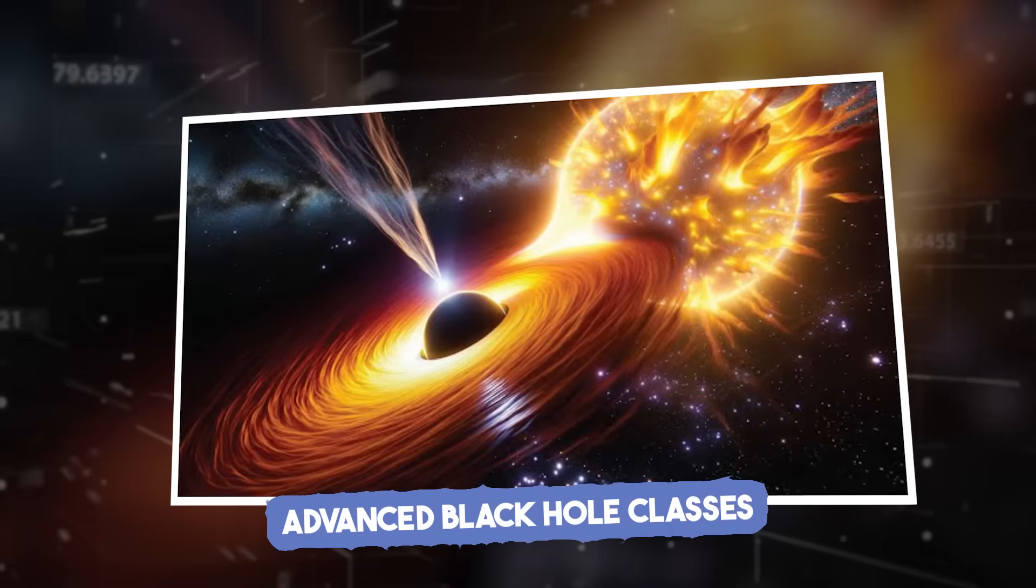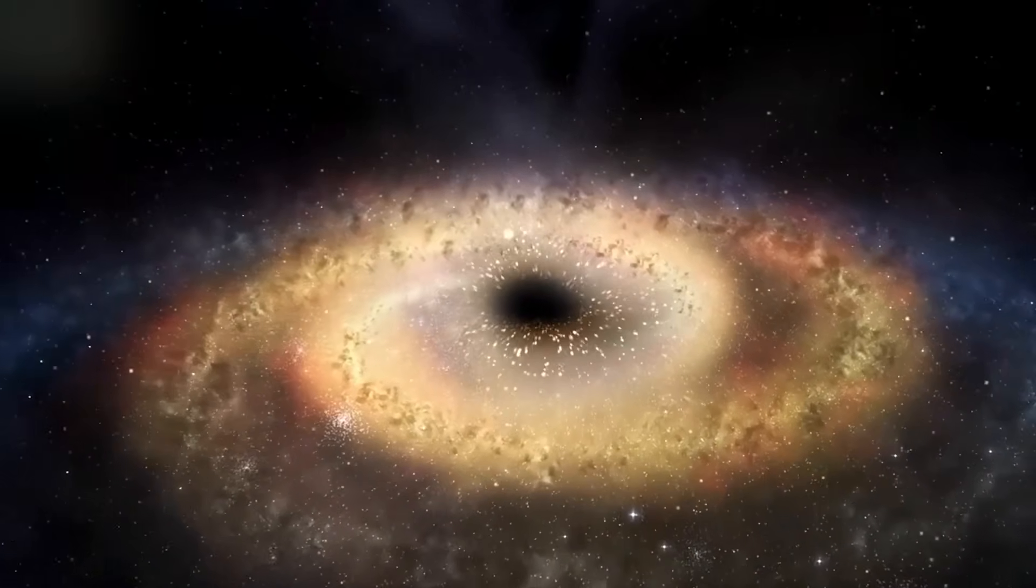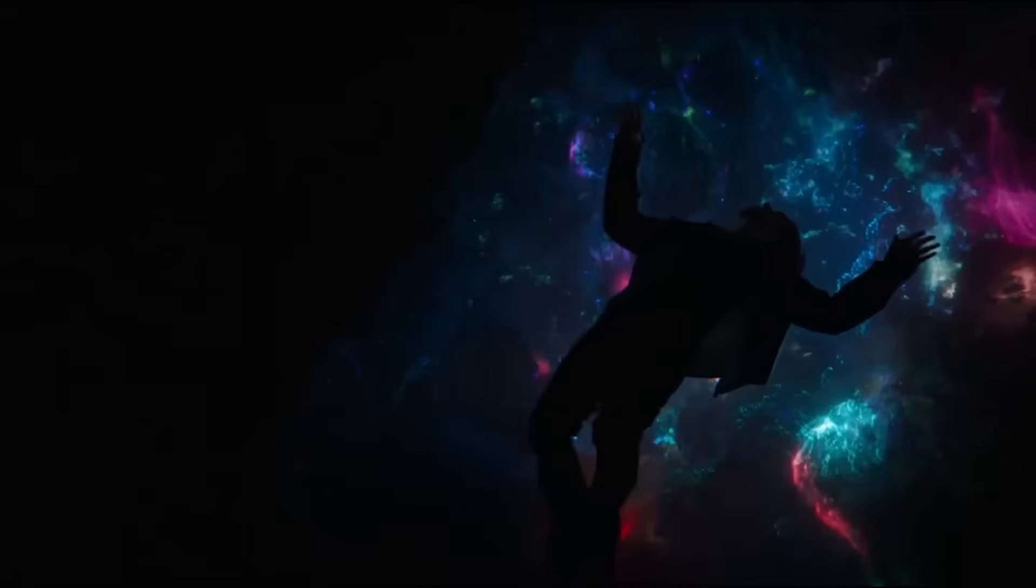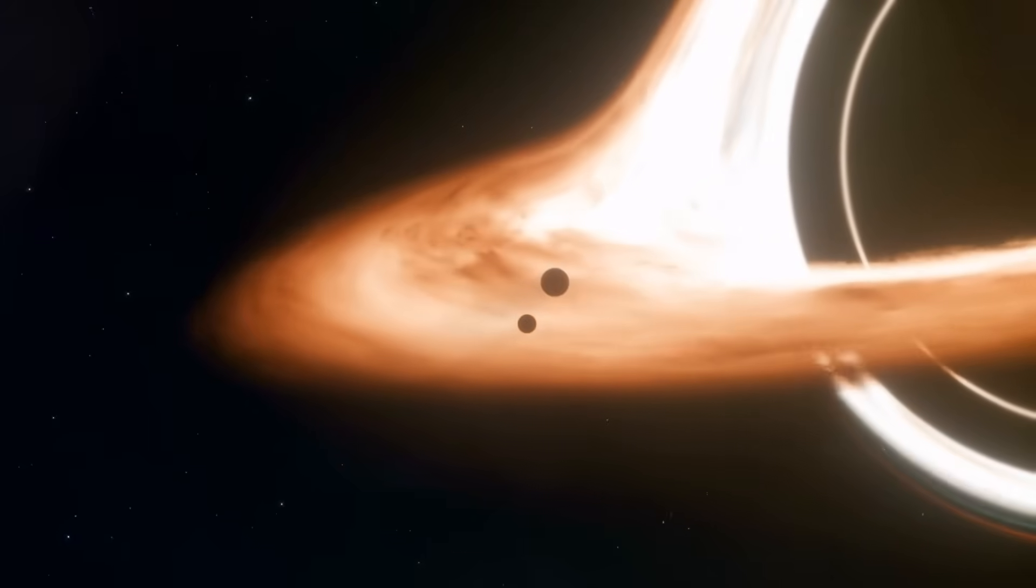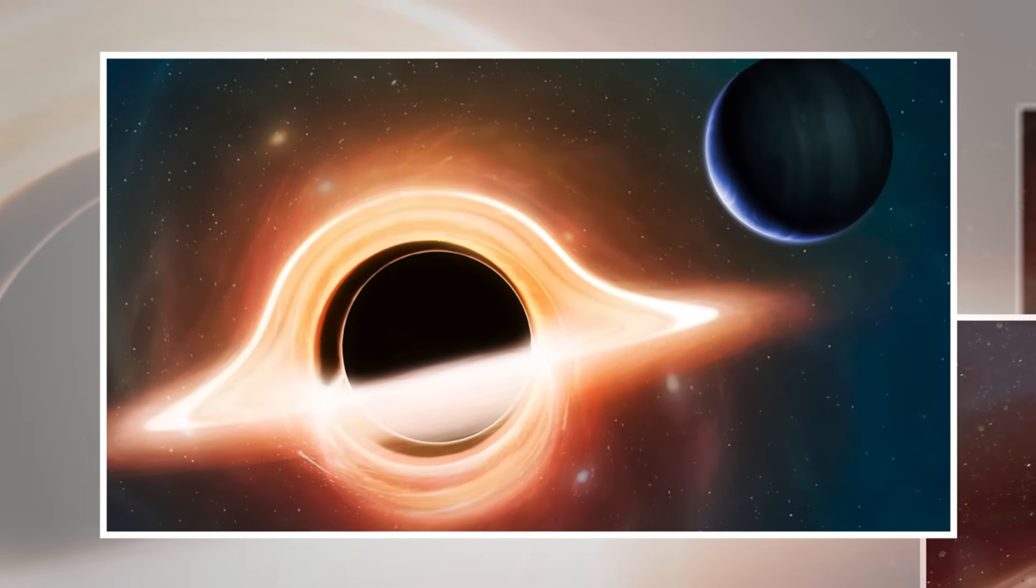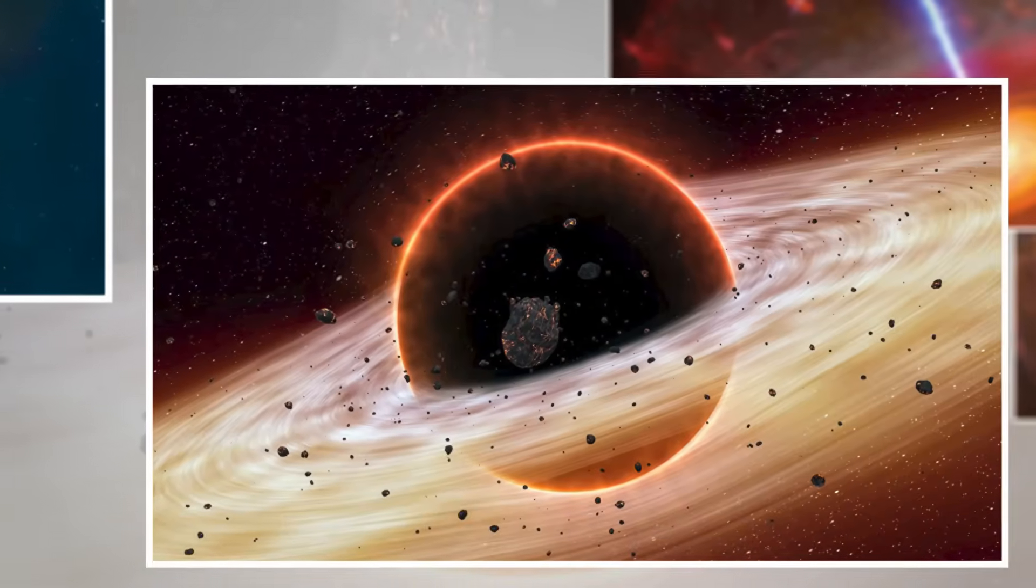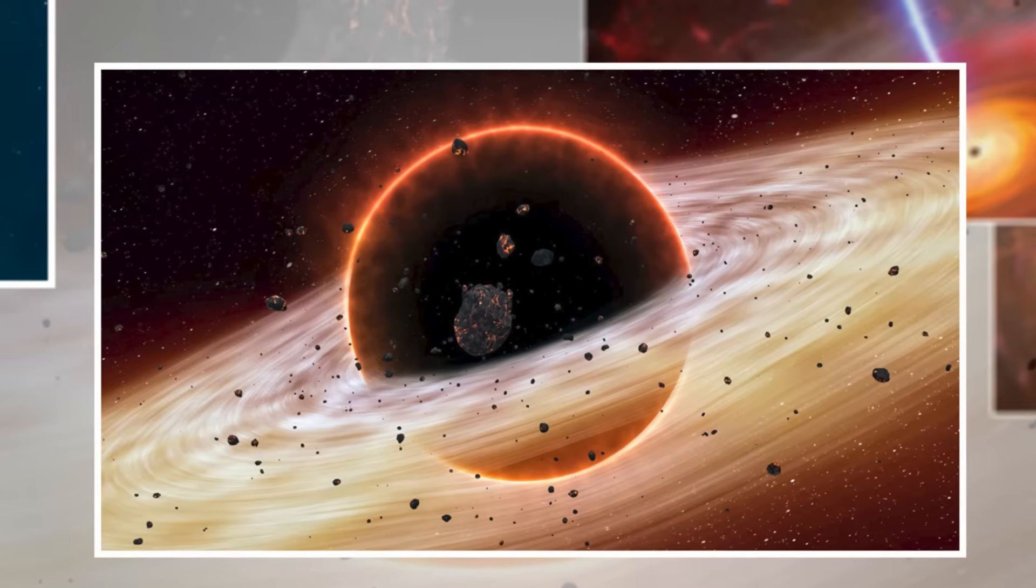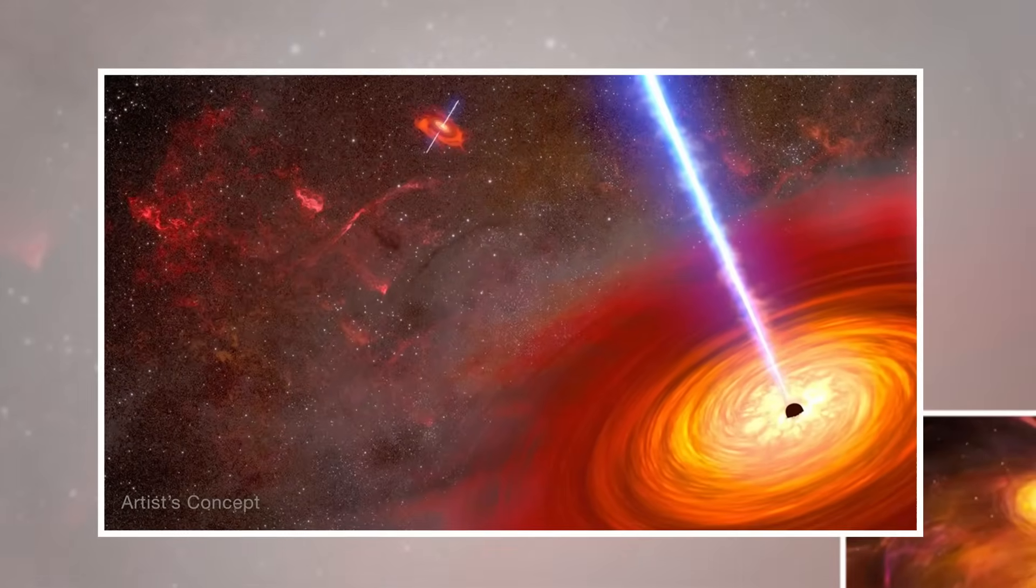Advanced black hole classes. When we talk about black holes, we often focus on the massive ones at galaxy centers. But the universe hosts a family of black holes, each with its own backstory. First, there are the intermediate-mass black holes. These are the cosmic middleweights, heavier than stellar black holes, but lighter than the giants. They're tough to find, but clues suggest they exist in places like star clusters. Then come the supermassive black holes, millions to billions of times more massive than the sun. These monsters sit at the heart of galaxies and shape how galaxies grow and evolve.